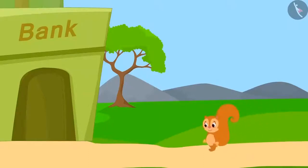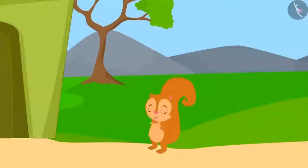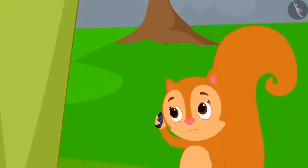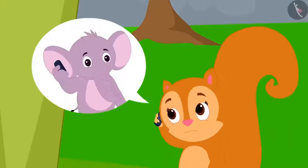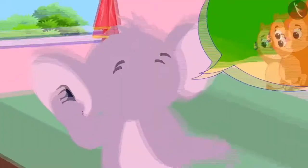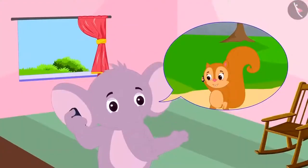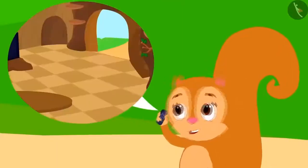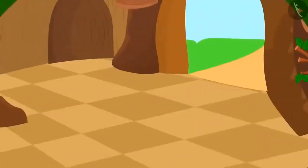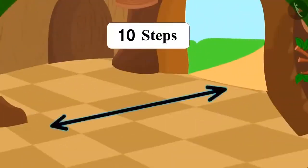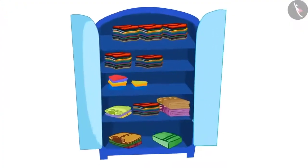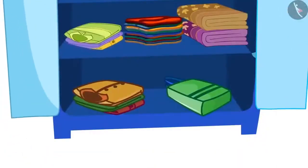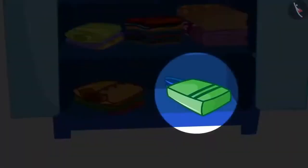Today Chanda has gone to the bank for some important work, but she has forgotten some important documents back home. She immediately called Appu and asked him to bring the papers. Appu asked where he would find the papers. Chanda told him that as soon as he opens the main door and enters the house, he has to walk 10 steps straight towards a blue cupboard, and find the papers in the lowermost shelf in a packet.